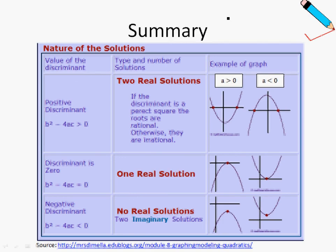To summarize, for this chapter on roots, we deal with three scenarios: the positive discriminant, the discriminant equal to 0, and the negative discriminant. A positive discriminant gives two real roots; discriminant equal to 0 gives one real equal root, as seen in the graph; and a negative discriminant gives no real roots — imaginary roots — whereby the curve never touches the x-axis.